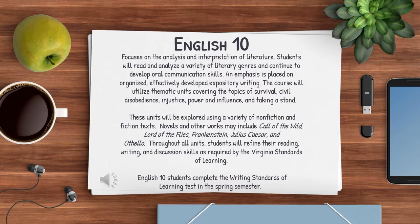English 10 focuses on the analysis and interpretation of literature. Students will read and analyze a variety of literary genres and continue to develop oral communication skills. An emphasis is placed on organized, effectively developed expository writing. This course will utilize thematic units covering the topics of Survival, Civil Disobedience, Injustice, Power and Influence, and Taking a Stand. These units will be explored using a variety of nonfiction and fiction texts.